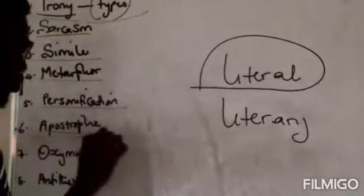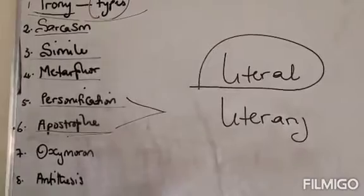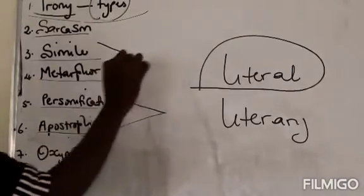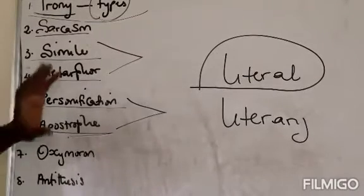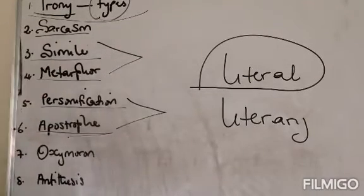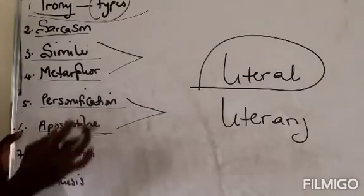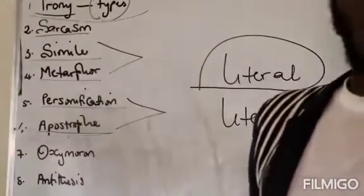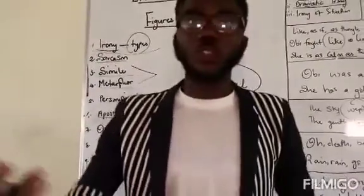The sixth figure of speech is apostrophe. You have to be careful because personification and apostrophe can be confusing. Personification is when you give human qualities to an inanimate object. But when you talk about apostrophe, apostrophe is when a person speaks to an inanimate object. This time around, you are not giving it a human quality — you are not talking about it, you are talking to it.